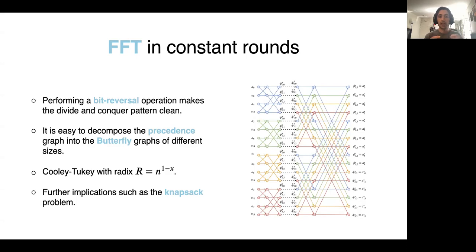This graph is defined as when a variable at any iteration of the algorithm, for example the Cooley-Tukey algorithm for solving FFT, depends on the value of another variable in the previous iteration, we put an edge between these two elements in the graph. We can show that we decompose this graph into butterfly graphs. If we use the Cooley-Tukey algorithm with radix n^(1-ε), we can fit these butterfly subgraphs into each machine and solve the FFT problem in two rounds.